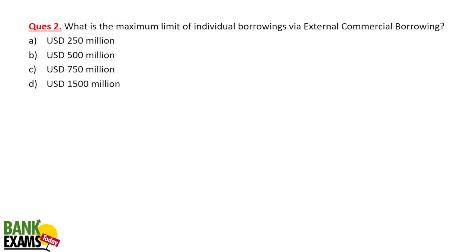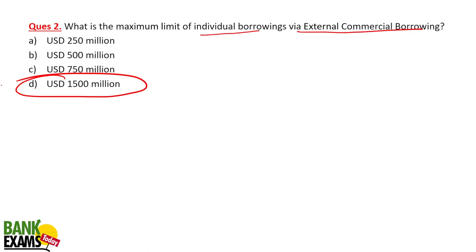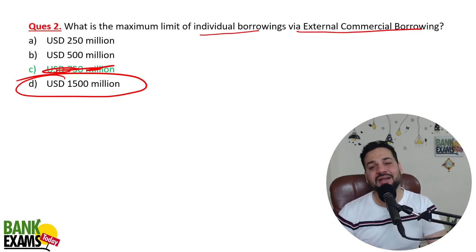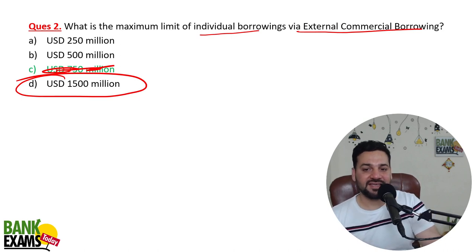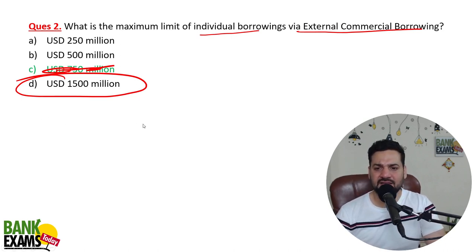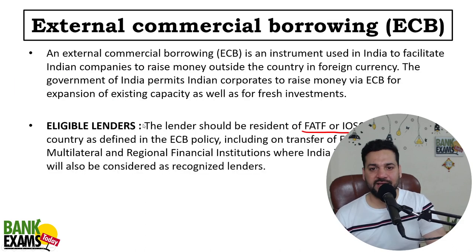Maximum limit kitna hai individual borrowings ke liye via external commercial borrowing? Obviously limit bhi lagi hai individual borrowings pe — yeh 1.5 billion hai, fifteen hundred million dollars hai. D is the correct answer. Pehle saadhe 700 million hua karta tha, lekin recently RBI ne isko update karke 1500 million, i.e., 1.5 billion kar diya hai. Ek live session mein maine ek baar galti kar di thi, lekin yeh update ho chuka hai.